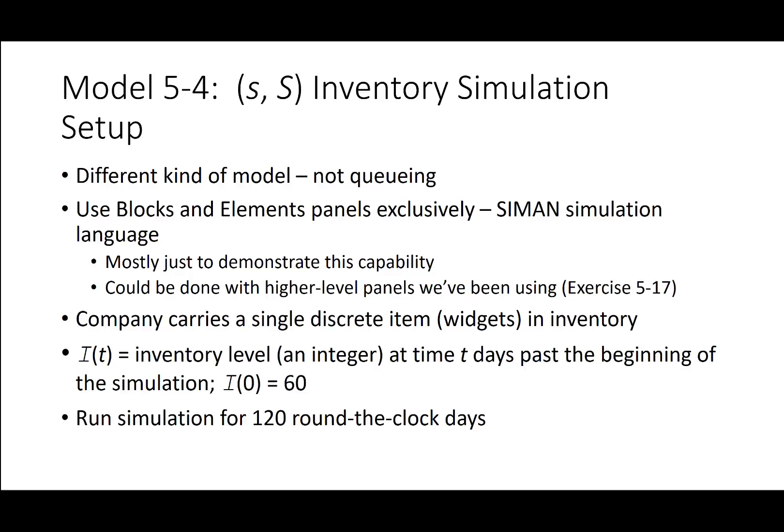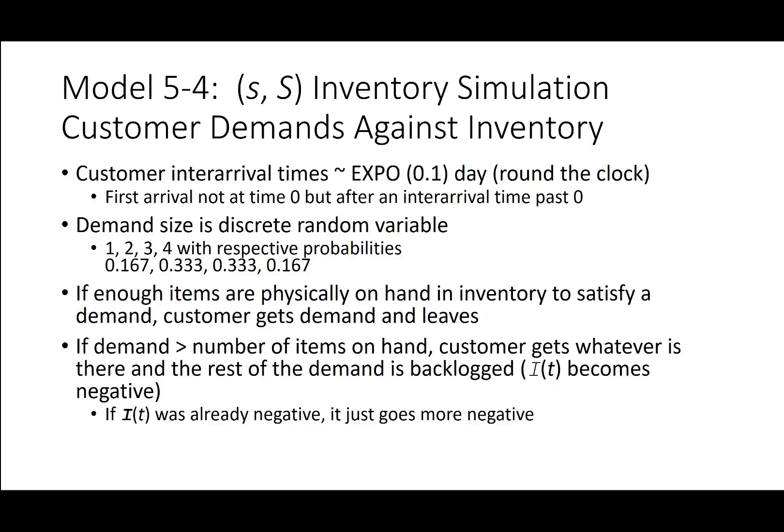We assume a company carries a single discrete item of inventory — widgets. The inventory level I(T) is an integer at time T days past the beginning of the simulation. The simulation runs for 120 round-the-clock days. Customer demand arrival times follow an exponential distribution of 0.1 per day, with the first arrival after one inter-arrival time. Demand size is a discrete random variable of 1, 2, 3, or 4 with different probabilities.